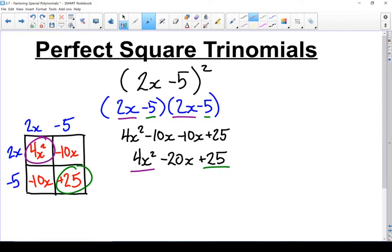This middle term, there's also a pattern to that. Notice how those two parts are the same? That 10x is your two terms from your binomial multiplied together and then just multiplied by 2. That's the anatomy of a perfect square trinomial.